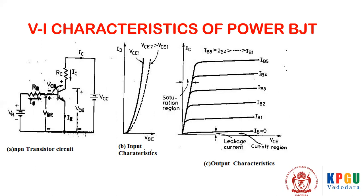When it is turned on, the current flows from collector to emitter — that is the on-state current. On the right side you can see the characteristics. When there is no base current, the transistor is in cutoff region, so there is no flow of collector current — this is the switch-off mode. When a sufficiently large base current is applied with forward bias and a positive VCE, it operates in the saturation region where a very large collector current flows. Saturation is the switched-on condition and cutoff is the switched-off condition. It is a current-controlled, fully controlled device.